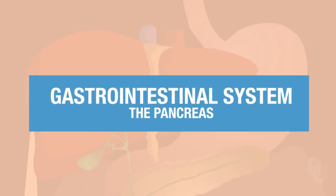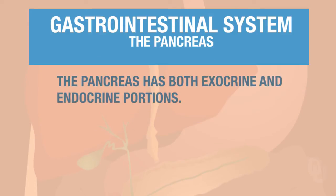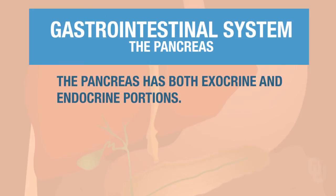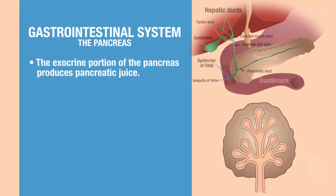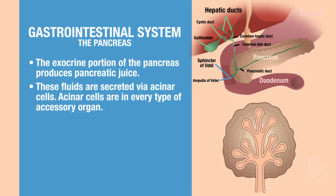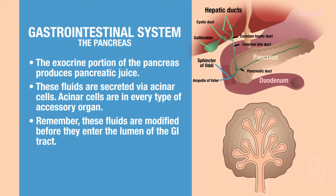The pancreas has both exocrine and endocrine functions. Endocrine functions will be discussed at a later time, so the focus here will only be on the exocrine portion. What the exocrine portion does is produce pancreatic juice, via acinar cells. Acinar cells are found in every type of accessory organ, and they produce some sort of fluid and solutes that have to be modified before they get dumped into the lumen of the GI tract.